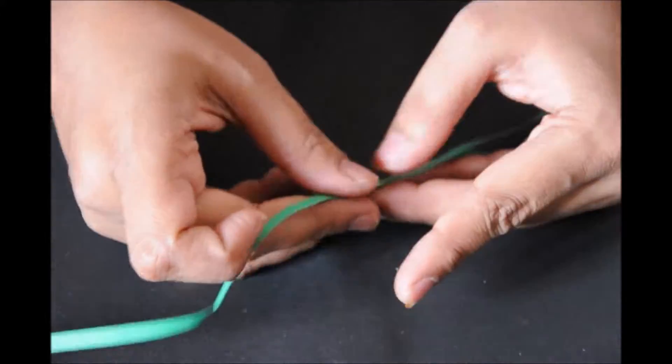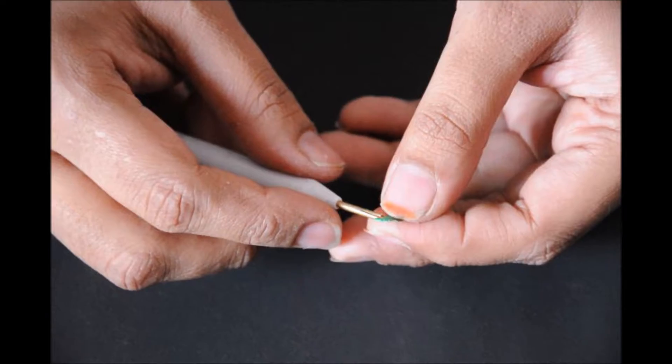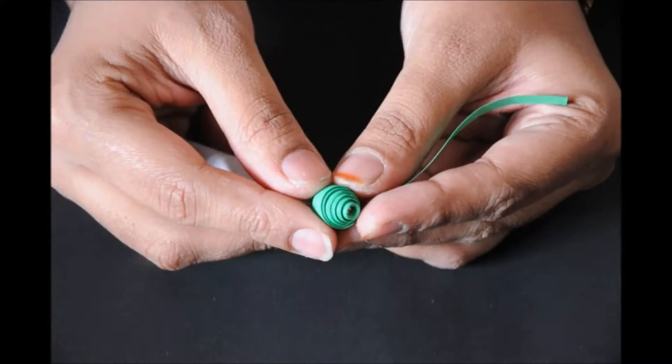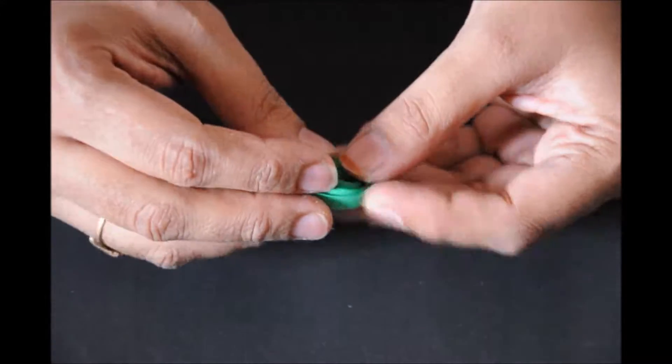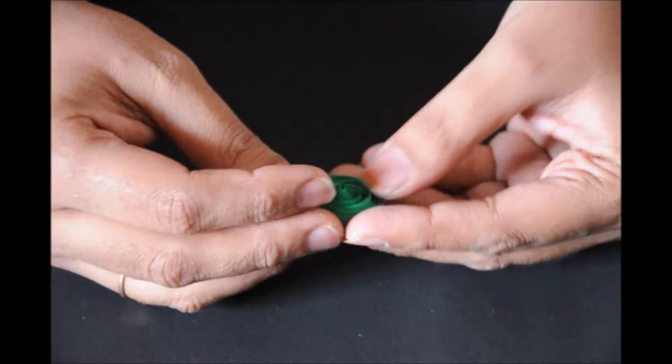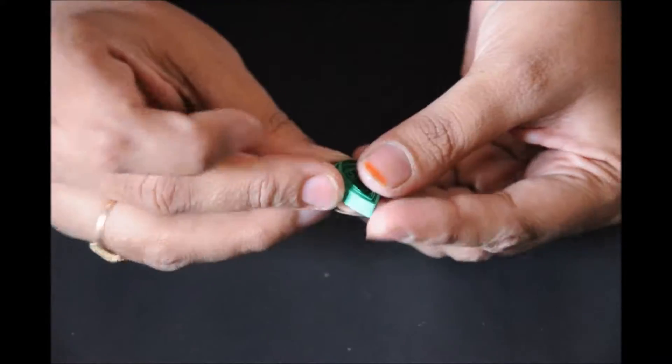We're going to have two green color quilling strips which are joined. Insert the quiller and start rolling to the end in a circular way. When it has come to the end, pull it out and loosen it to the maximum possible extent, then make it into a triangular shape.